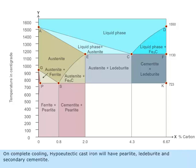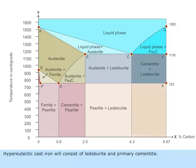On complete cooling, hypoeutectoid cast iron will have pearlite, ledeburite and secondary cementite. Hypereutectoid cast iron will consist of ledeburite and primary cementite.